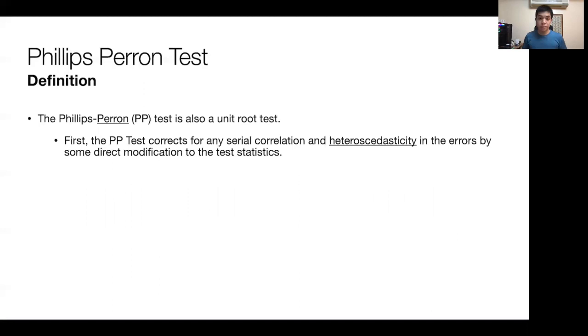What's a more general version of the test? We have what we refer to as the Phillips-Perron test. The Phillips-Perron test, like the DF and ADF, is also a unit root test. The first thing the PP test does differently is that it corrects for any serial correlation and heteroskedasticity in the errors by some modification to the test statistics directly. So the problem that the ADF solved, which is if the error term was not a white noise error term and had a degree of autocorrelation, is automatically fixed by virtue of the modification of the test statistics in the Phillips-Perron test.